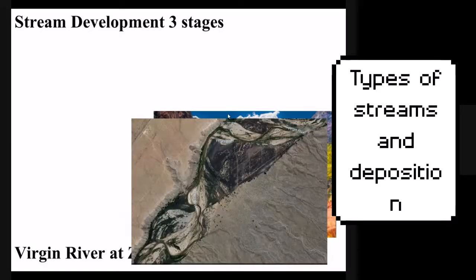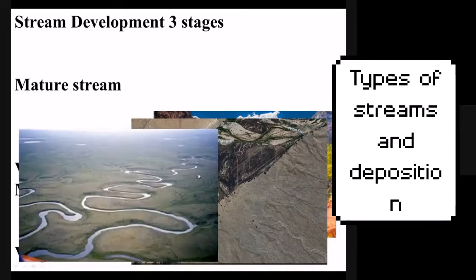A mature stream might be the Virgin River shown in this Google satellite image. You can see it's constrained on both sides by a hilly area to the left and to the right. In the middle it has a floodplain which it meanders between both sides. An old stream might be this image right here — you can see the entire image is a flat floodplain. The stream meanders whichever direction it wants, and there are no sides constraining this floodplain. It is very, very wide.